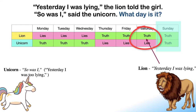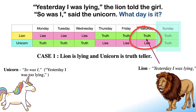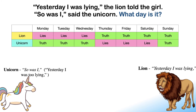Let's consider two cases to figure out the correct answer. In Case 1, the lion is lying and the unicorn is the truth-teller. For the unicorn's statement — 'Yesterday I too was lying' — to be true, it must be Sunday today. But on Sunday, the lion always speaks truth, and the lion's statement can't be true on Sunday as concluded earlier. Hence today must be a different day.